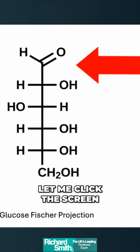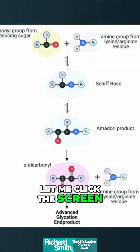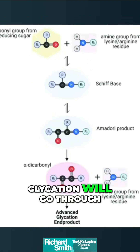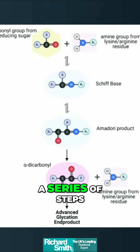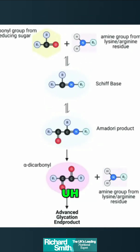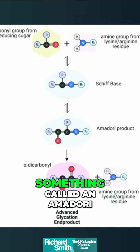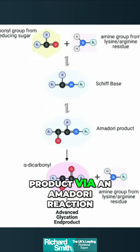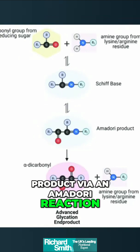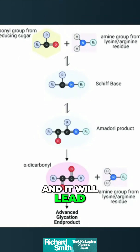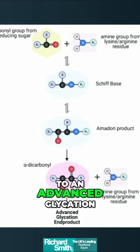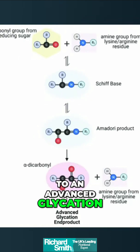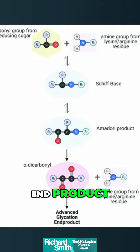Now, glycation will go through a series of steps. It will create something called an Amadori product via an Amadori reaction, and it will lead to an advanced glycation end product.